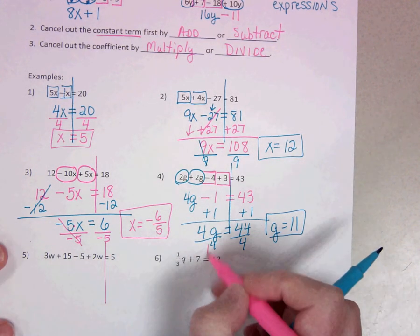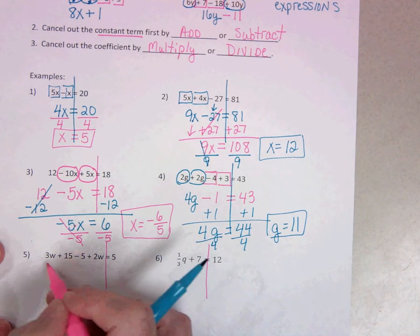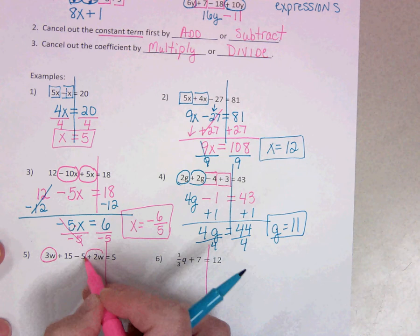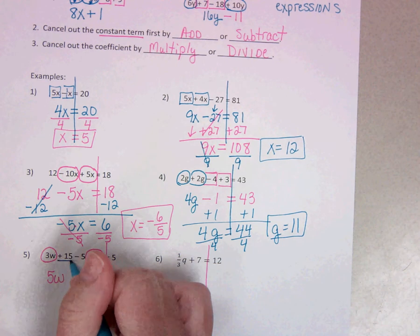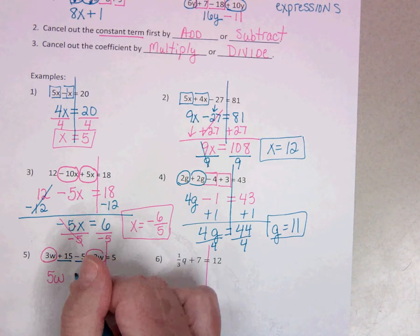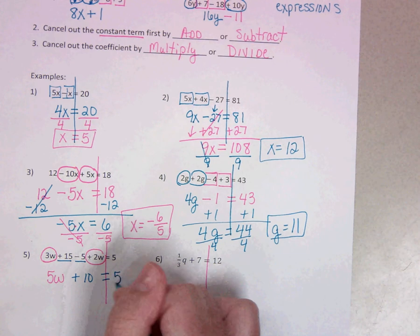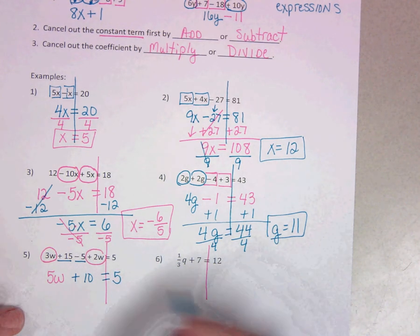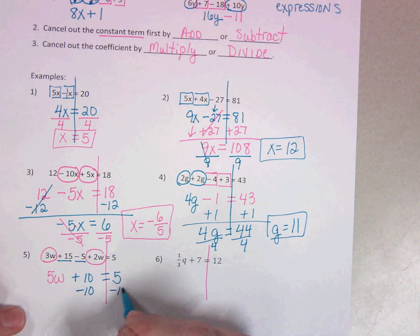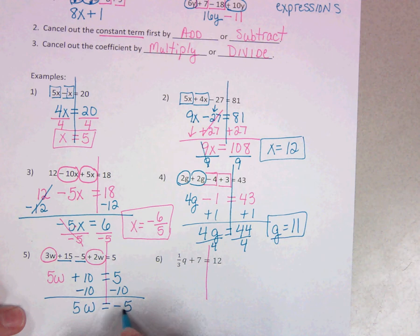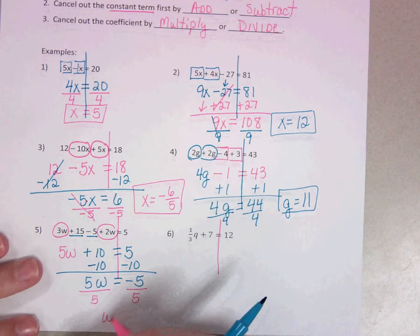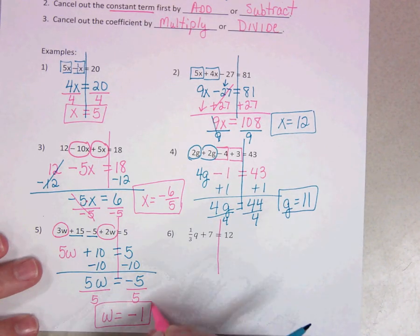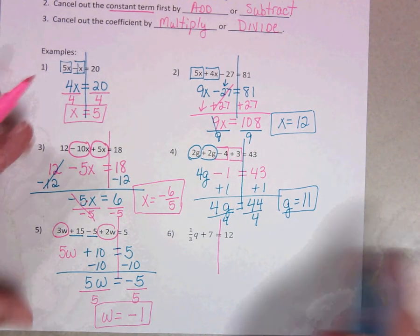Two more. Again, looking for our like terms. 3w and 2w. These are on the same side. Makes 5w. 15 minus 5 makes 10. And then we're going to separate those. Minus 10, minus 10. 5w equals negative 5. Divide by 5. w equals negative 1.